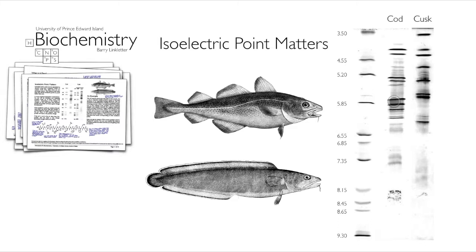Isoelectric point matters — it lets us separate proteins according to their isoelectric point. If you knew the isoelectric point of a protein, you could know the exact pH at which to work on the ion exchange column: start a little below its isoelectric point, move to a little above, collect that fraction, and then sweep the rest off by taking the pH up. So isoelectric point matters in separating proteins, and we'll have more to discuss about separating proteins later in the course.